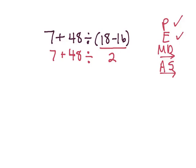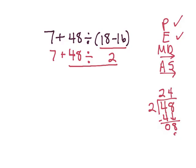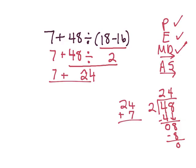Exponents? No. Multiplication or division? Yes, there is a division problem. So I'm going to do 48 divided by 2. 2 goes into 4 two times; 2 times 2 is 4, subtract and get 0. Bring down my 8 — 2 goes into 8 four times; 4 times 2 is 8, subtract and get 0. That's 24. Is there any multiplication or division left? No. Next is addition or subtraction — I have 7 plus 24. 7 plus 4 is 11, carry the 1; 2 plus 1 is 3. So the answer is 31.